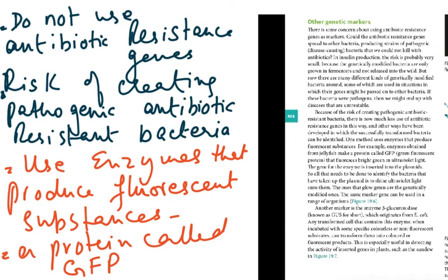Initially we used antibiotic resistance genes as markers alongside the insulin gene. However, genetic engineers feel this is risky — if those plasmids were transferred to disease-causing bacteria like tuberculosis or cholera, we could end up with antibiotic-resistant pathogens. So genetic engineers have now stopped using antibiotic resistance genes as markers.